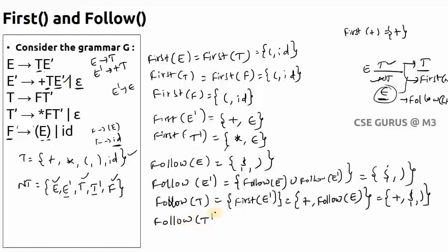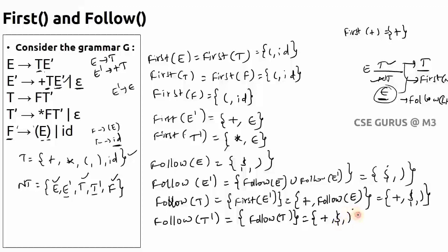For Follow(T-dash): locate T-dash on the right-hand side. In E-dash → + T T-dash, nothing follows T-dash, so it's the epsilon case. Follow(T-dash) = Follow of the left-hand side E-dash. But Follow(E-dash) = { $, ) }, and unioning with Follow(T) gives Follow(T-dash) = { +, $, ) }.